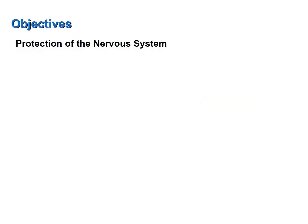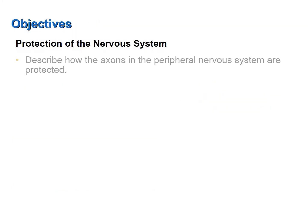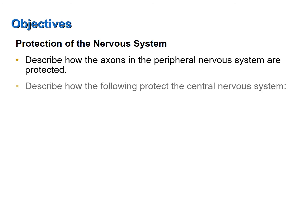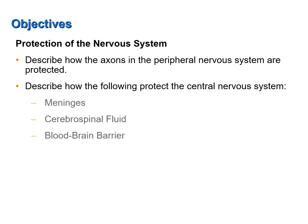This screencast was designed to help you achieve the following objectives: Describe how the axons in the peripheral nervous system are protected. Describe how the following protect the central nervous system: the meninges, cerebrospinal fluid, and the blood-brain barrier.